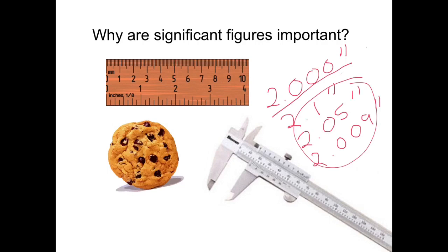Now, if you're the person getting to eat the waste, this might not be a bad thing. But if you're the engineer responsible for providing 100 cookies, this is definitely not a good thing. It's going to take a lot longer to make 100 cookies with 2.000 inches in diameter than 100 cookies that are just 2 inches in diameter. And certainly, there's going to be a lot more scrap, so the cost of making just one good cookie just went up exponentially.